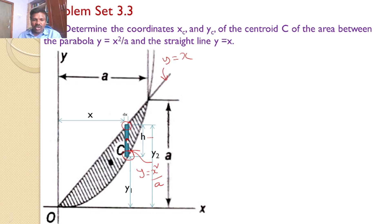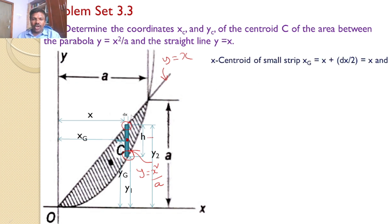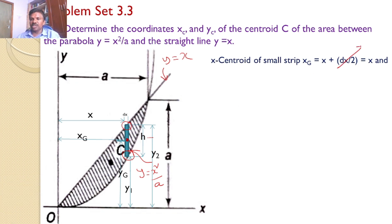Now let this be the centroid of the small strip. The strip centroid is at distance yg vertically and xg horizontally. By calculating xg and integrating over the limits, we can find the centroid of the bounded area. The x-centroid of the small strip is xz. From the diagram, xz = x + dx/2. Since dx/2 is very small, it can be neglected, so xz = x.